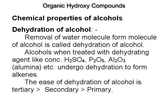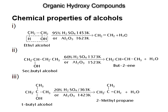Dehydration of alcohols. Removal of the water molecule from the molecule of alcohol is called dehydration of alcohol. Alcohols when treated with dehydrating agents like concentrated H2SO4, P2O5, or Al2O3 (alumina) undergo dehydration to form alkenes. The ease of dehydration of alcohol is tertiary > secondary > primary.